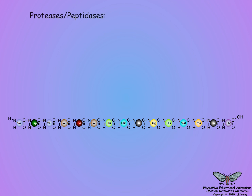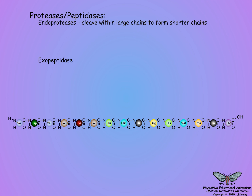Protein digestion occurs by two groups of enzymes: endoproteases and exopeptidases. Endoproteases cut amino acid chains within the chain to form numerous shorter chains. The two most prevalent endoproteases for insect digestion are similar to the vertebrate serine endoproteases, trypsin and chymotrypsin.